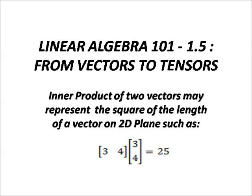Example here: [3, 4] times [3, 4] vector inner product equals 25, which equals the square of the length of the vector [3, 4].